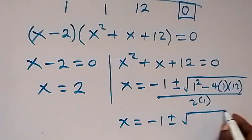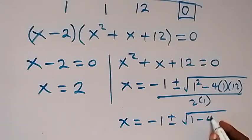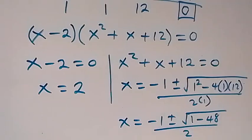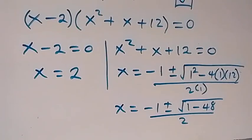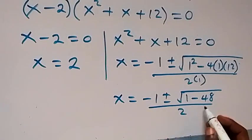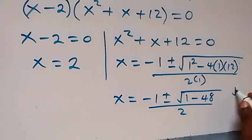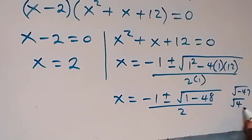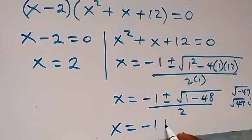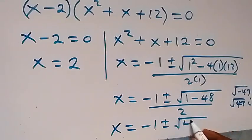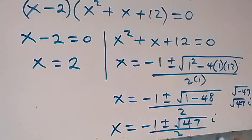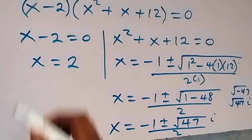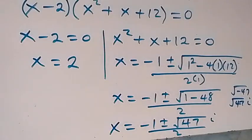This gives x equals minus 1 plus or minus square root of 1 minus 48, all over 2. Now 1 minus 48 gives minus 47, so we have square root of minus 47, which gives root 47 times i. So x equals minus 1 plus or minus root 47 i, all over 2. We have two complex solutions and one real solution x equals 2. This completes the first method.